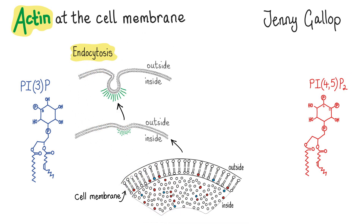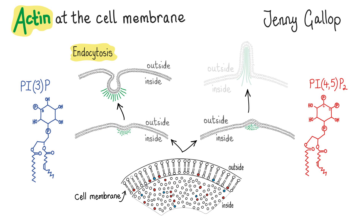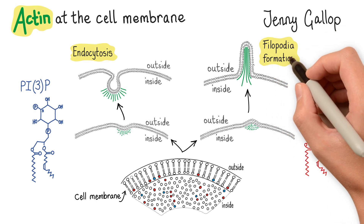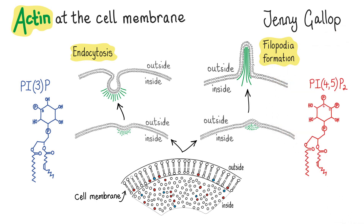The membrane can also curve in the opposite direction and point out protrusions. These are called filopodia and they help cells to sense their environment and find out where they need to go.